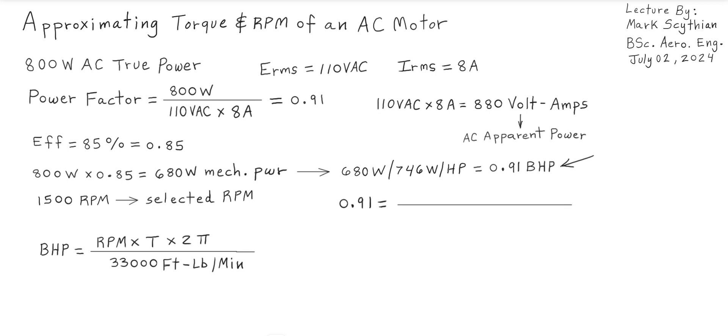So if we make 0.91 brake horsepower equal to the brake horsepower formula, we can cross-multiply the denominator with the output value of 0.91. Then 0.91 is made equal to the numerator, or RPM times T times 2π.